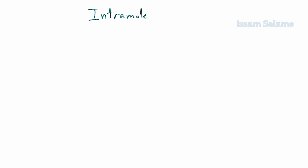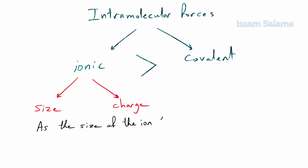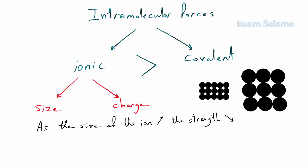Regarding intramolecular forces — ionic and covalent bonding — ionic bonds are stronger than covalent bonds. The strength of ionic bonding depends on the size of the ions and their charge. As the size of the ion increases, the strength of the ionic bond decreases, because the spaces between the ions become bigger, so the ions are farther from each other and the bond is weaker.